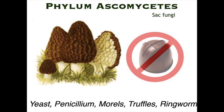The last phylum we're going to talk about is Phylum Ascomycetes. If you rearrange the first three letters — A-S-C — we get 'sac.' This is a sac-like fungi. Examples include yeast, penicillin — which is made into the antibiotic penicillin to fight bacteria — morals, and truffles.